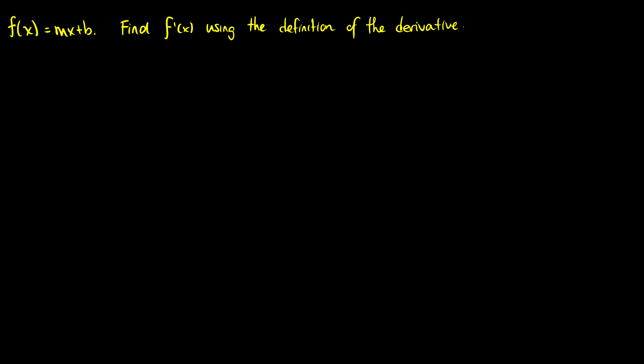In this video we're going to do some questions using the formal definition of the derivative. We have f of x equal to mx plus b and we want to find f prime of x using the definition of the derivative. So we're going to have the limit as h goes to zero of f of x plus h minus f of x, all over h.